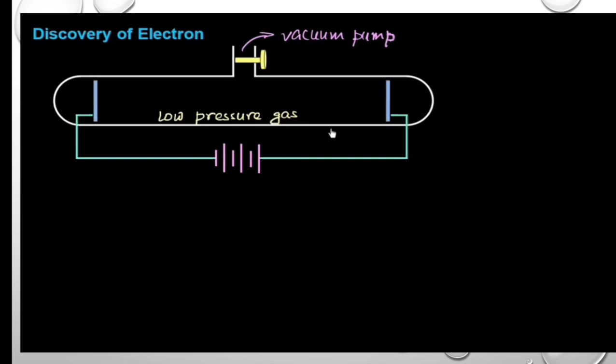This is a high-voltage battery. This is the negative side source and this is the positive side. So, the metallic strip connected with the negative side battery is the cathode and the metallic strip connected with the positive side of the battery source is the anode.